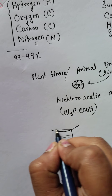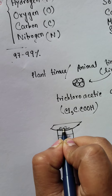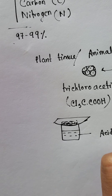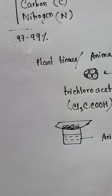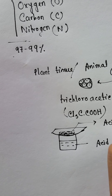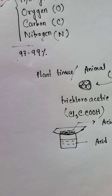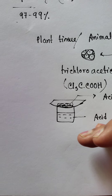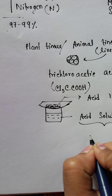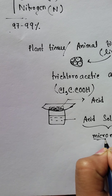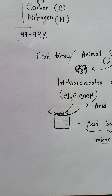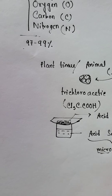After grinding and straining, we get a filtrate portion and a supernatant. The filtrate is called the acid soluble pool, and the supernatant part is called the acid insoluble pool. The acid soluble pool contains chemicals with small molecular mass — these are called micromolecules. The supernatant contains large, high molecular weight complex molecules — these are called macromolecules.